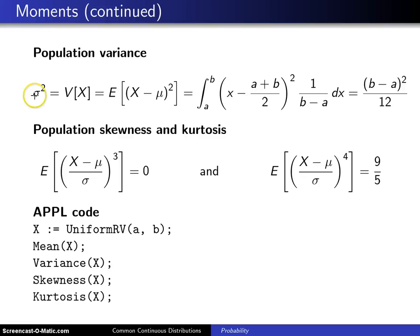So to find the population variance σ², which is the variance of x, the defining formula, not the shortcut formula in this case, but the defining formula is the expected value of x minus μ squared. So that x minus μ squared will go in front of the probability density function 1 over b minus a. Notice that μ has been replaced with a plus b over 2. That is integrated over the support. Now the details are being left out, but if you work that integral, you will eventually get b minus a squared divided by 12.